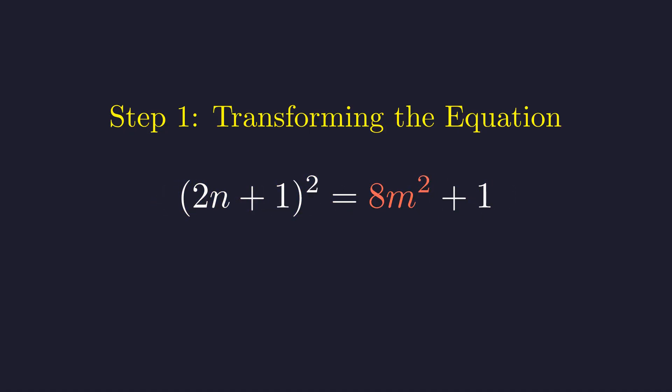To reveal the final structure, we subtract 8m squared from both sides. This brings us to a remarkable equation.